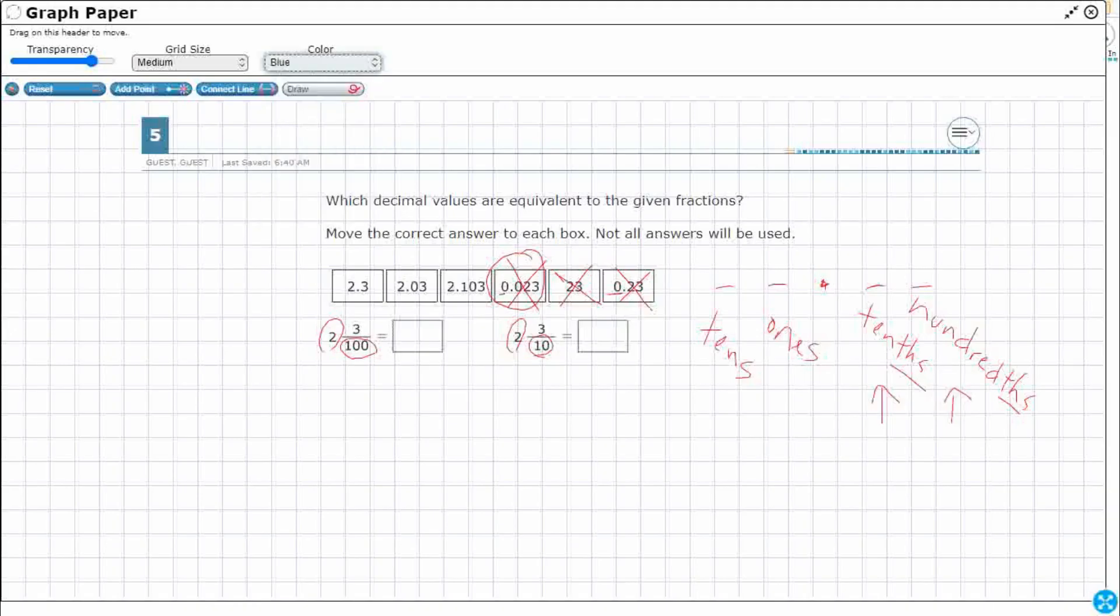Let me change colors here. Let's look at this first one. So two. This isn't the ones place. This is a whole number. So I need this to be two. And look at this. Three hundredths. Three hundredths. So I need to put the three in the hundredths spot.